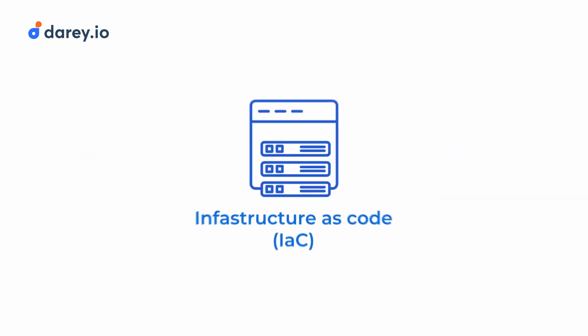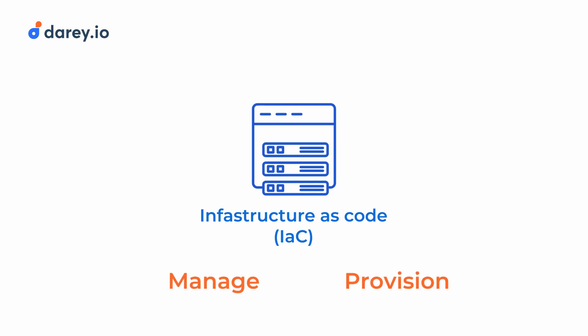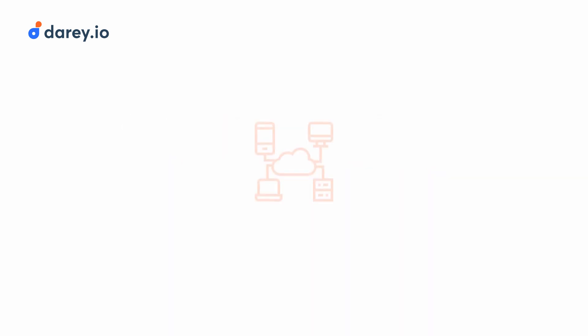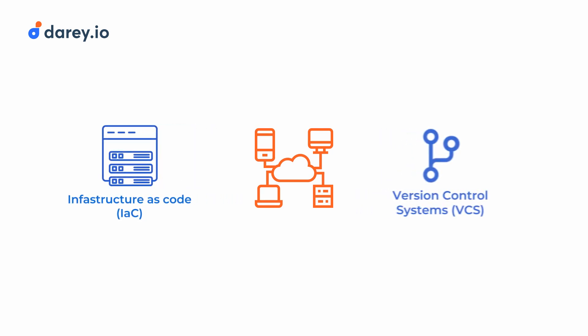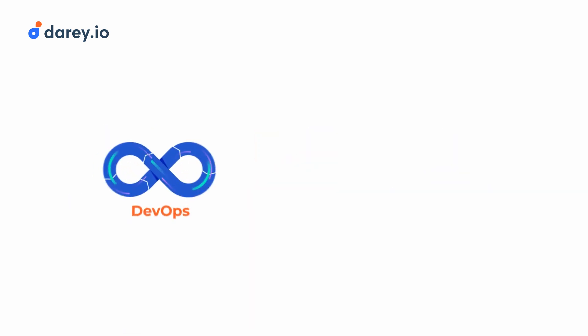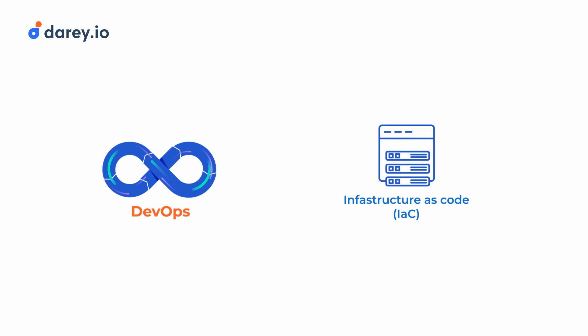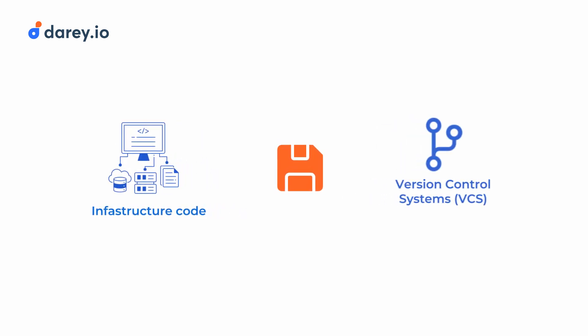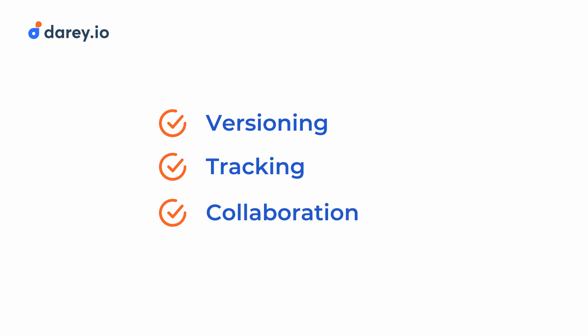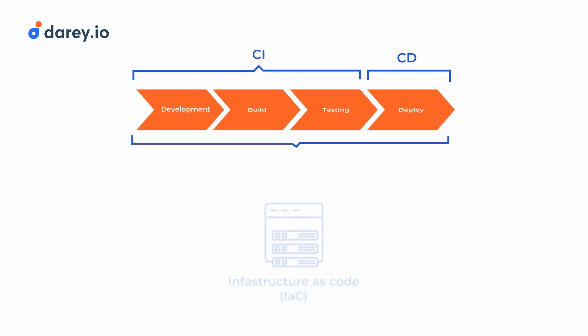One of the great benefits of adopting IAC is that it allows us to manage and provision cloud infrastructure through code, just as you would with your application code. This is where VCS and CI/CD come in. By integrating infrastructure as code with a VCS such as Git and implementing CI/CD, you can create a unified DevOps workflow that treats infrastructure code just like application code. You can store your IAC templates and scripts in the same version control system, enabling versioning, tracking and collaboration on infrastructure changes.